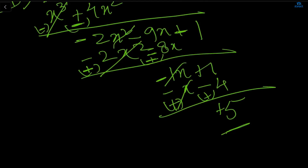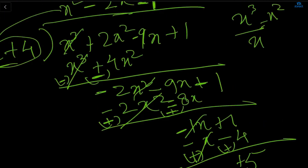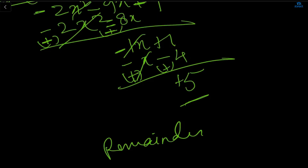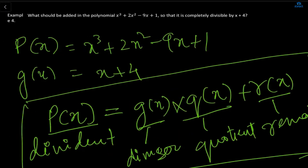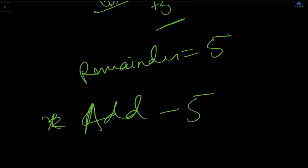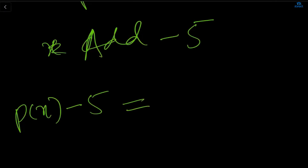Plus 5 is the remainder. There is no variable coefficient left — this is the final number. We check that the degree of the remainder is less than the degree of gx: gx has degree 1 and the remainder has degree 0. So the remainder is 5. Now, since we want the polynomial to be completely divisible, we need to add minus 5. Whenever you get remainder as plus 5, you add minus 5; if the remainder is minus 5, you add plus 5.